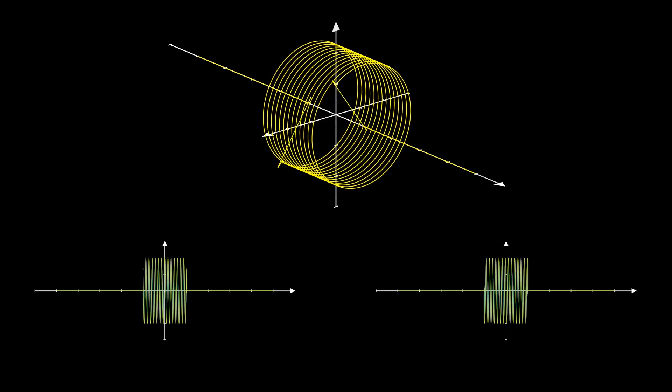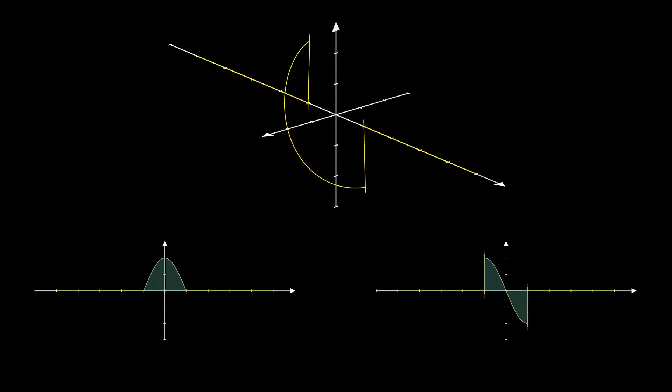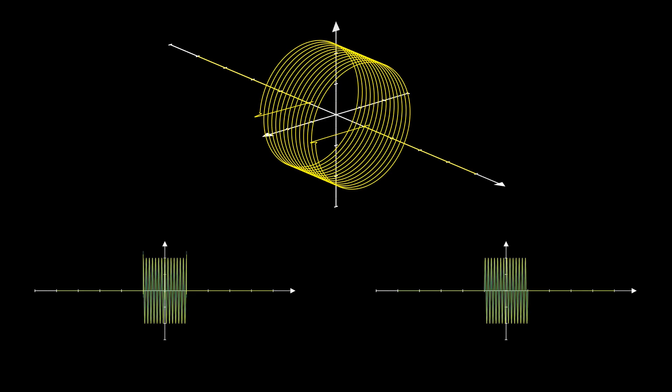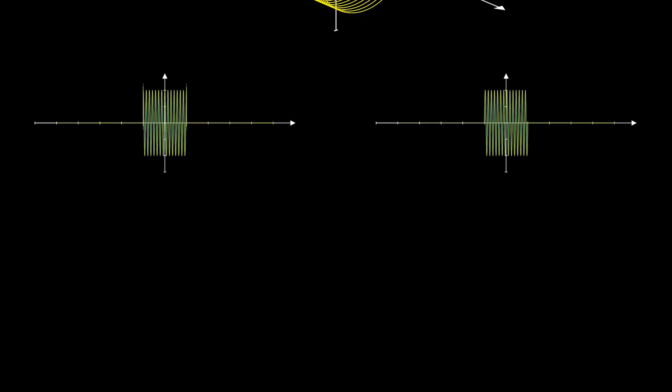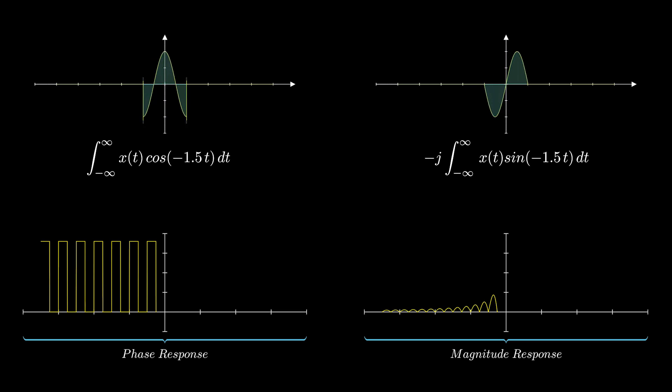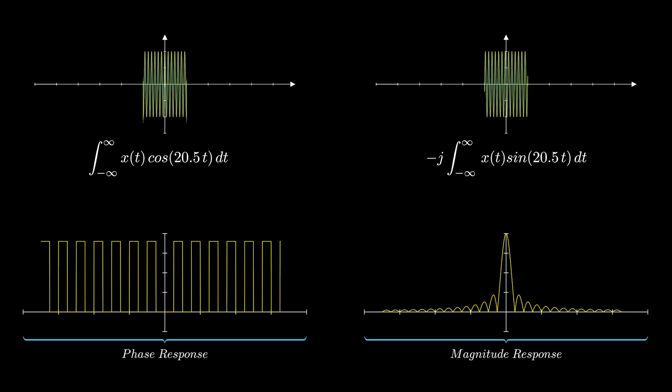Or wrapping up the function around the time axis with certain wrapping frequency, then sweeping up and down the frequency. By frequency, I mean the winding frequency around the time axis, or the frequency of the unit amplitude complex exponential. Both are the same. While sweeping the frequency, we calculate the area under the real and imaginary parts of the wound-up graph. By finding the magnitude and phase of the complex number represented by these two areas at each frequency, we get the entire Fourier transform of the function.